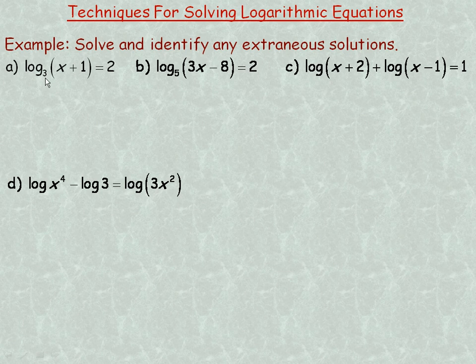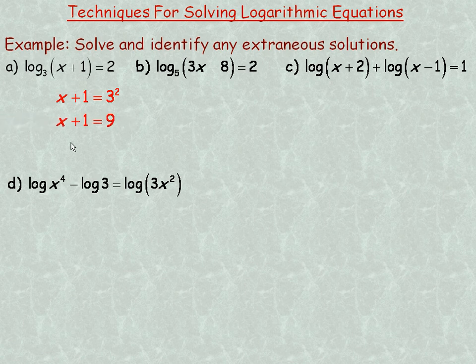An equivalent exponential form would be 3 squared equals x plus 1, or x plus 1 equals 3 squared. And of course 3 squared is 9, so x plus 1 equals 9, and so x would equal 8.